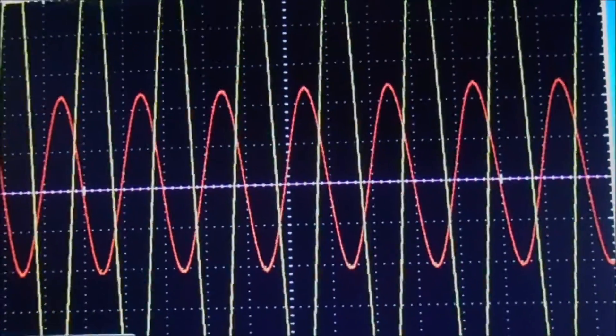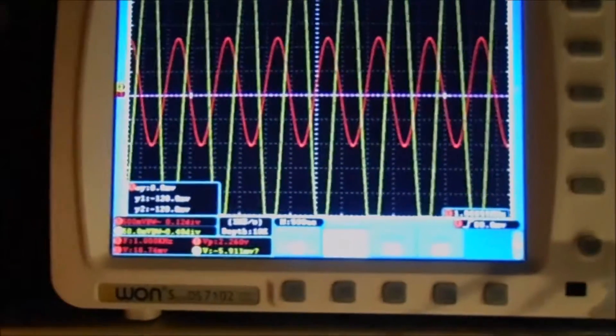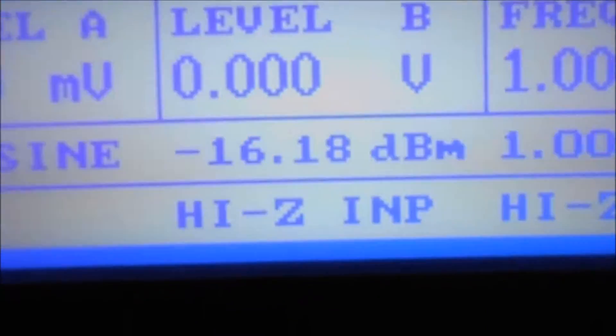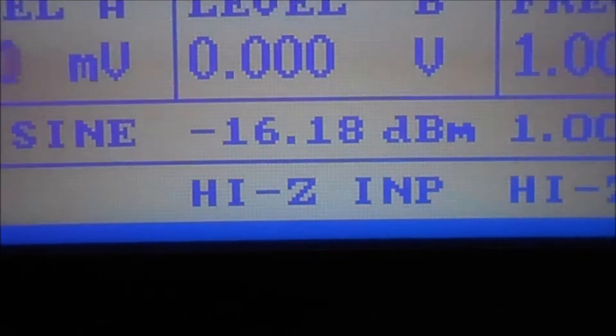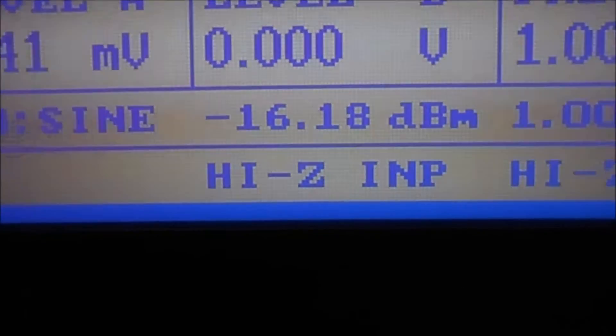Well, good. This is the maximum input signal at half gain. As you can see, the input signal now is minus 16.18 dBm.